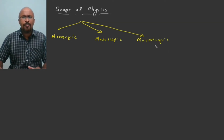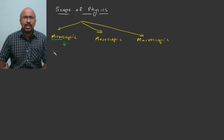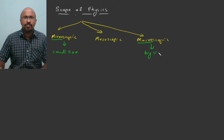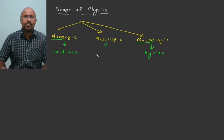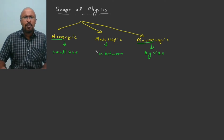The microscopic domain deals with small size objects — 'micro' means small. The macroscopic domain deals with big size objects — 'macro' means big. And in the mesoscopic domain, the size of objects or phenomena is in between microscopic and macroscopic.